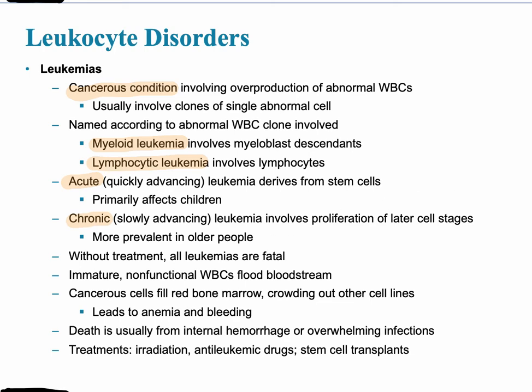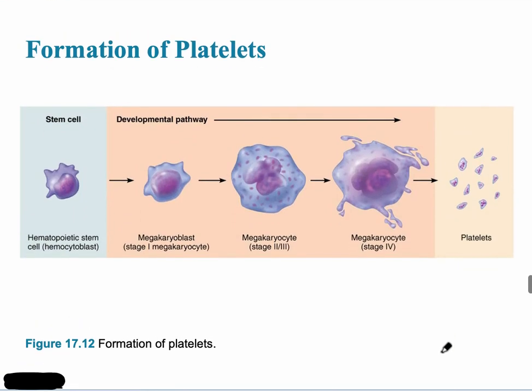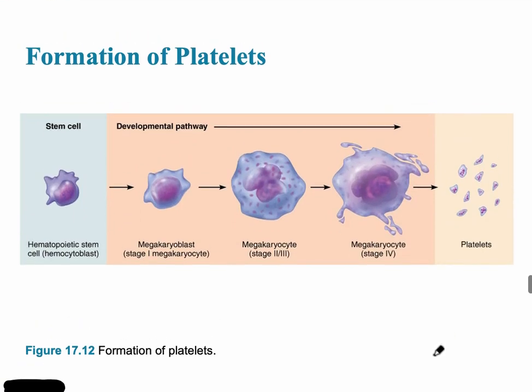The last of the formed elements is called the platelet, or thrombocyte. It's really just a part of a cell — we refer to them as cell fragments. The original stem cell, referred to as the hemocytoblast, eventually develops into the thrombocyte, the platelet.